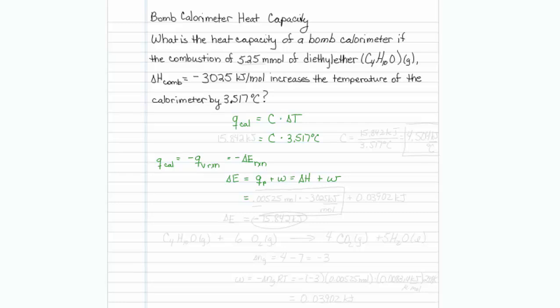I think we can get heat at constant pressure pretty easily. We're given 0.00525 moles, so I've just converted my millimoles to moles, and I'm also given the enthalpy of combustion, so that's minus 3,025 kilojoules per mole.